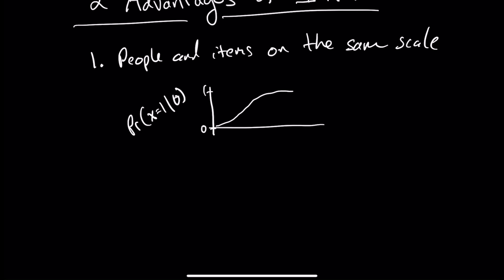Items have this property called difficulty or item location, which lets us say this is where the item is on that scale. And we're saying because of this level of trait, this item allows us to make an inference about a person relative to that position.